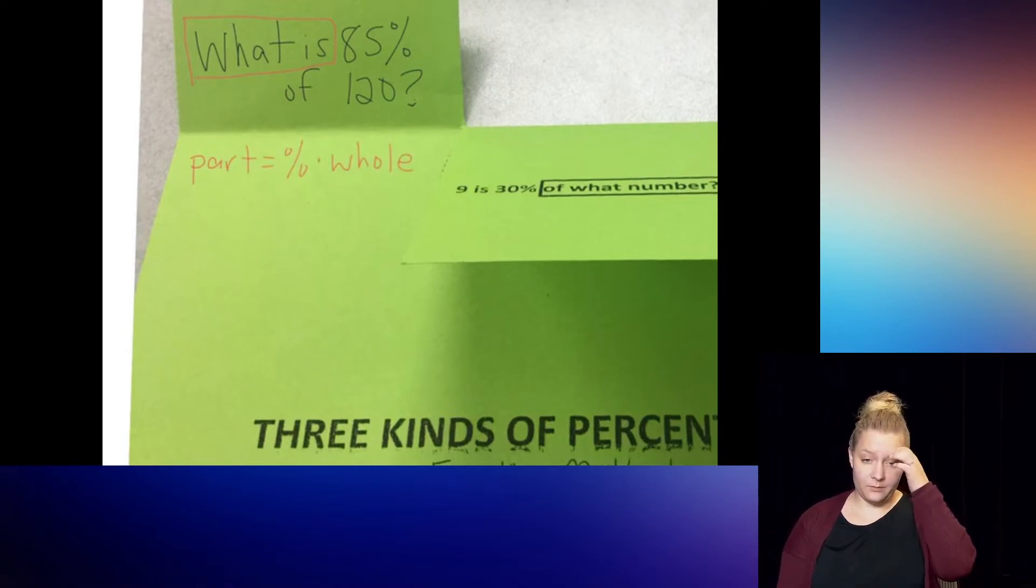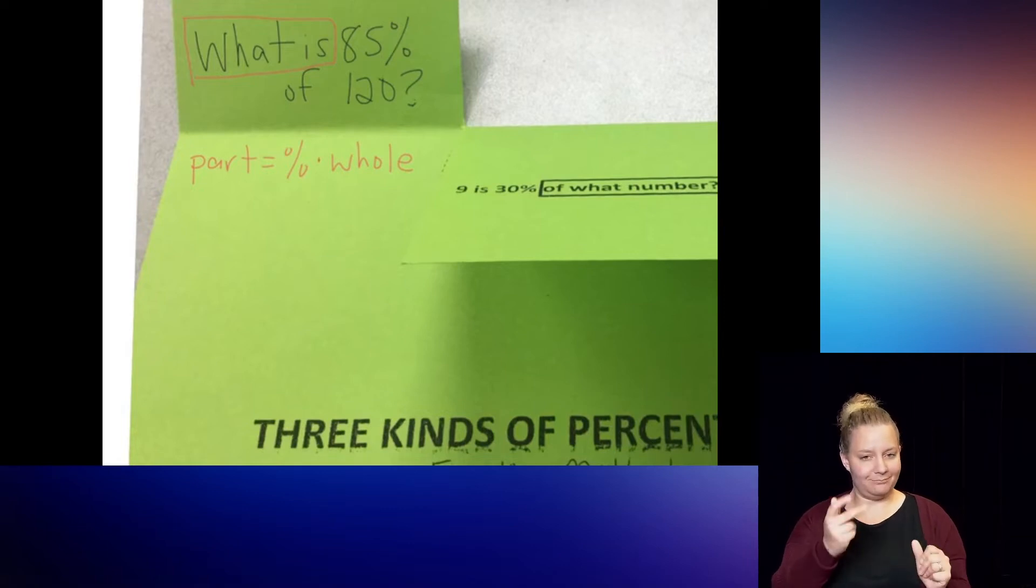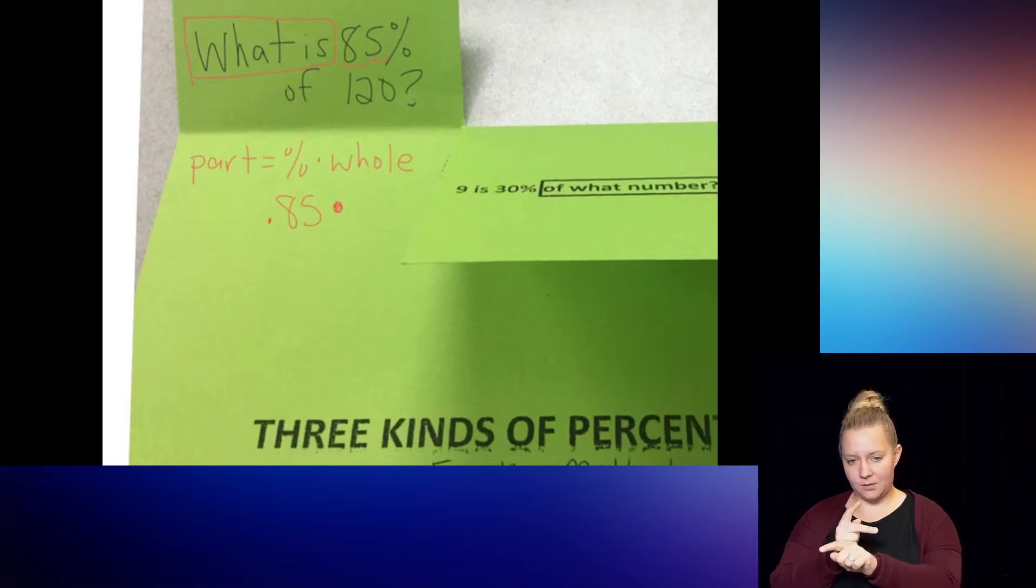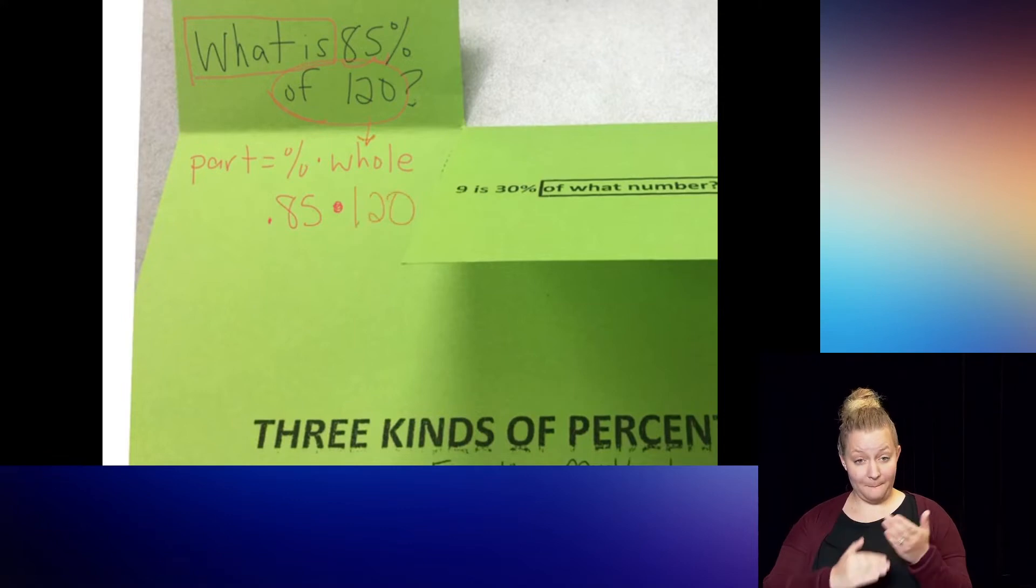And since our percent, we see right away 85%. Whenever I see my percent sign, I'll use that real quick. But I'm going to move that decimal twice to the left. So I'm going to write 0.85 times the whole amount. Well, I see here it's taken out of 120. So that's the whole. So I'm going to put that right there. And the part of the segment out of the 120 is the part that's missing. So I'm going to put my x there.